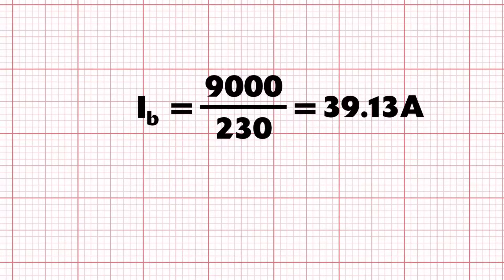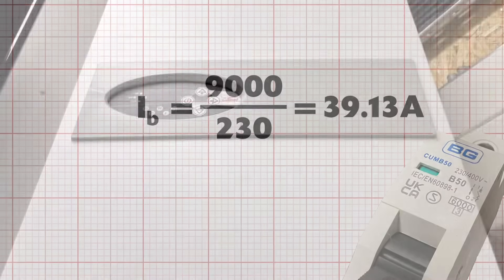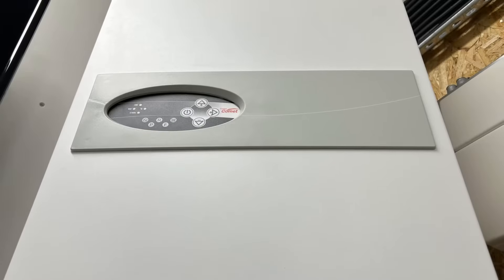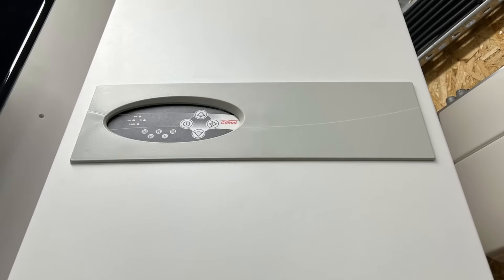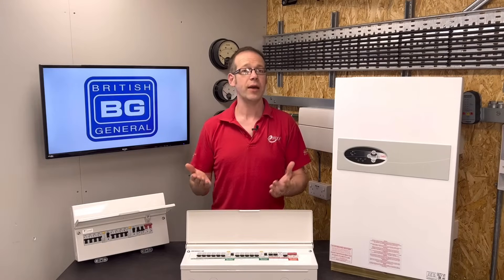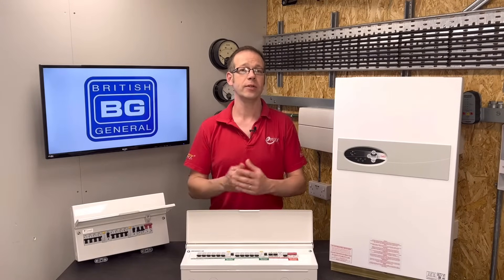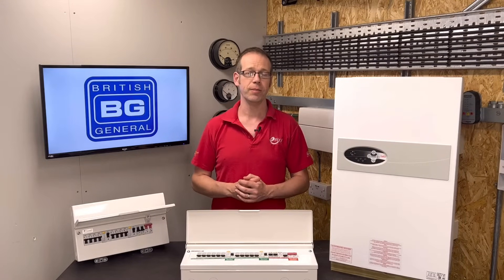In the previous videos in this series we calculated design current and we figured out the circuit breaker size from BG Electrical that we'd use for a circuit feeding this Fusion Comet electric boiler from the Electric Heating Company. So what's next? Now I need to figure out what current my cable needs to be able to carry in the way that it's been installed.